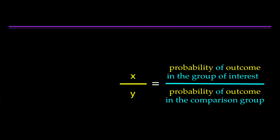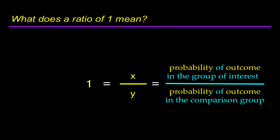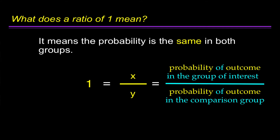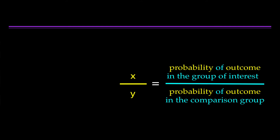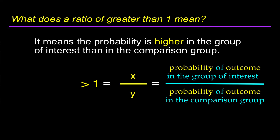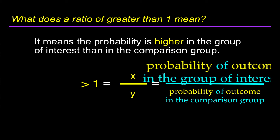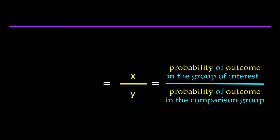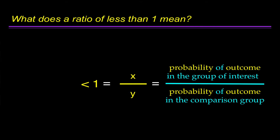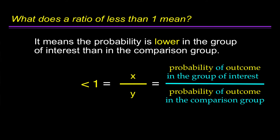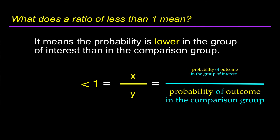That is a ratio of two numbers, x over y. A ratio of 1 means the probability is the same in both groups — the numerator and denominator must be the same. A ratio of greater than 1 means the probability is higher in the group of interest than the comparison group — the numerator is bigger than the denominator. A ratio of less than 1 means the probability is lower in the group of interest — the numerator is smaller than the denominator.